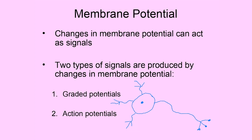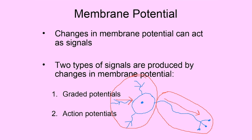Graded potentials are changes in membrane potential happening in the area of the dendrites and sometimes the soma. These are wave-like changes in membrane potential that travel down the dendrites toward the cell body. Action potentials are changes in membrane potential happening in the area of the axon, traveling as a wave down the axon away from the cell body.